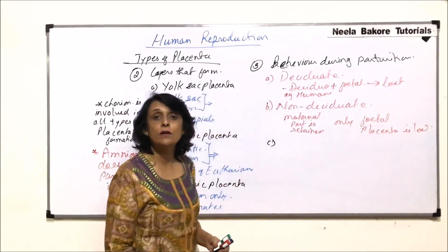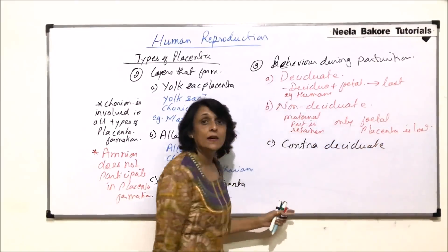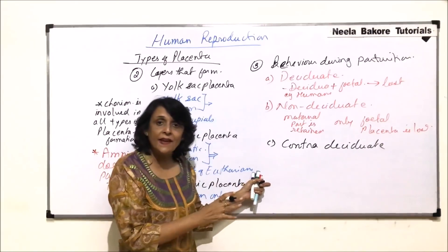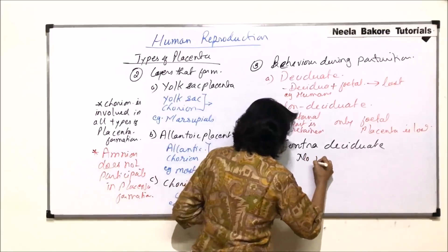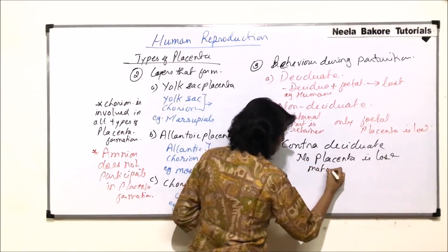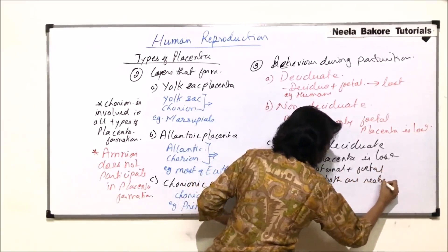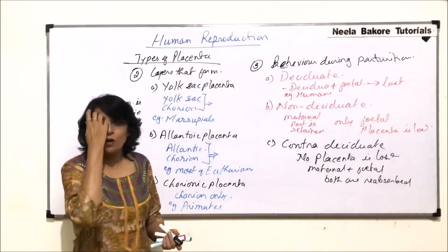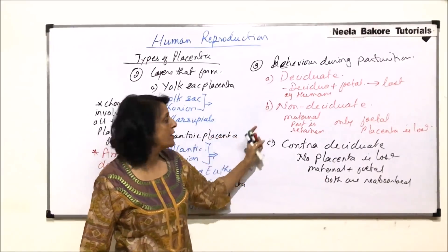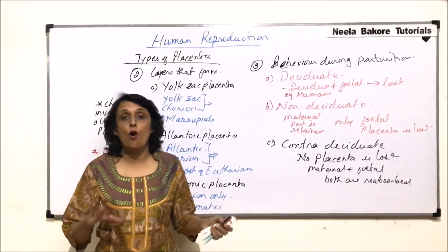The third type is known as contra-deciduate. In contra-deciduate, neither the maternal nor the fetal placenta is lost — it is only the fetus which is expelled; everything else is reabsorbed by the body. So, based on behavior after parturition, we classify placenta as deciduate, non-deciduate, and contra-deciduate.